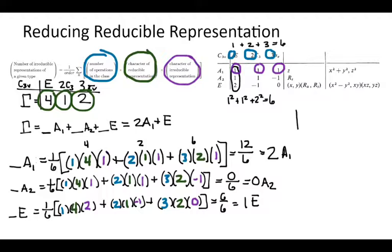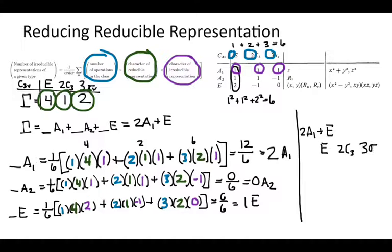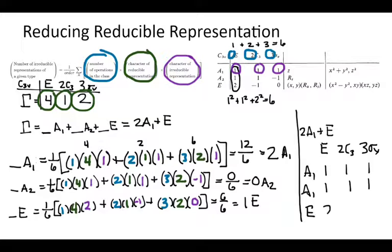To verify what this means: in the C3V point group with classes E, C3, and three sigma V, A1 is 1, 1, 1. With two A1s, we have two rows of 1, 1, 1. The E irreducible representation is 2, negative one, zero. Summing all of these up: one plus one plus two is four; one plus one plus negative one is one; and one plus one plus zero is two. That gives us back our original reducible representation of 4, 1, 2.